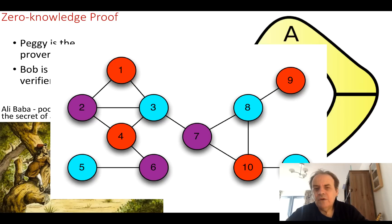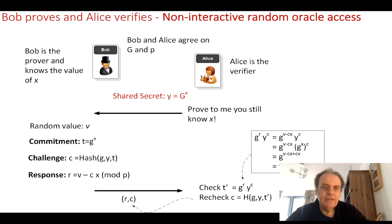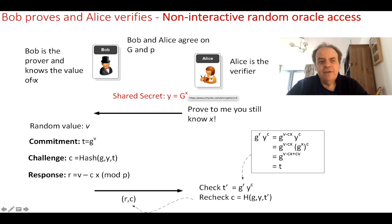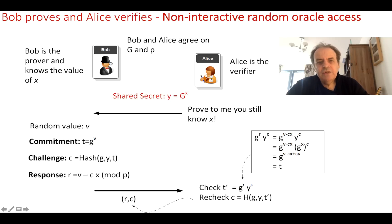One of the most well-known methods is called non-interactive random oracle access. In this approach we have a shared secret: a value x. Using discrete logarithms, we use a generator g and a prime number p, and we raise g to the power of x and then take mod p. So the shared secret between Alice and Bob is y = g^x mod p.